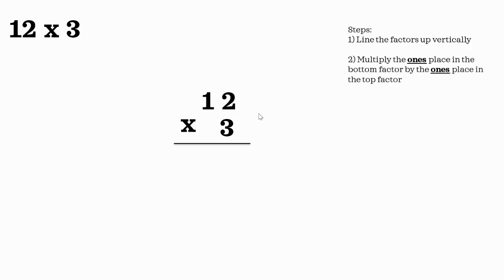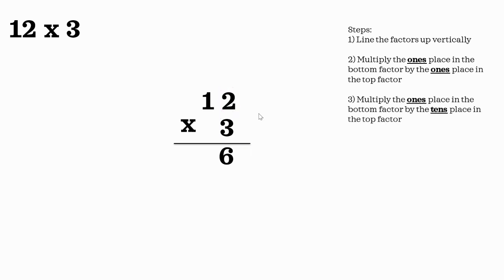Now we're going to multiply the ones place in the bottom factor by the ones place in the top factor. So the 3 is in the ones place in the bottom factor and the 2 is in the ones place in the top factor. So 3 ones times 2 ones equals 6 ones, which is why the 6 is going in the ones place. The next step is to multiply the ones place in the bottom factor by the tens place in the top factor. So we're going to multiply 3 ones times 1 ten, since the 1 is in the tens place. Well, 3 ones times 1 ten equals 3 tens, which is why the 3 is in the tens place in our answer. So 12 times 3 equals 36.